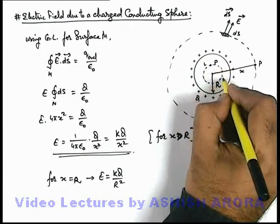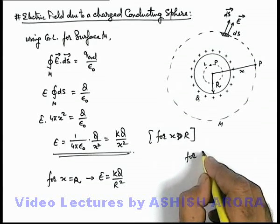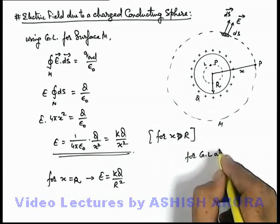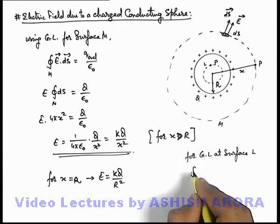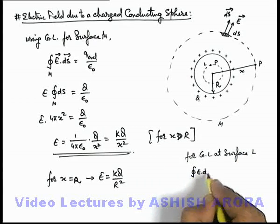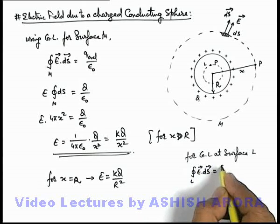Then for this surface L if we apply Gauss law we can write, for Gauss law at surface L, we can write it as integration of E dot ds for the surface L is equal to Q enclosed by epsilon not.